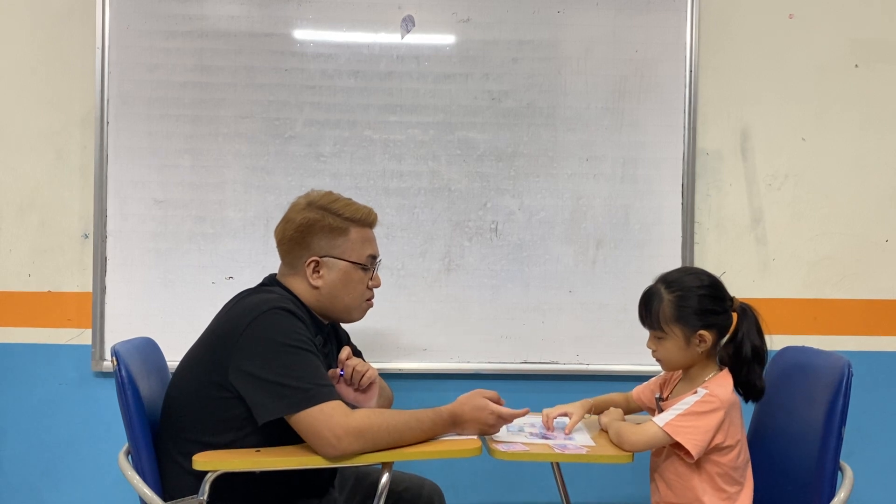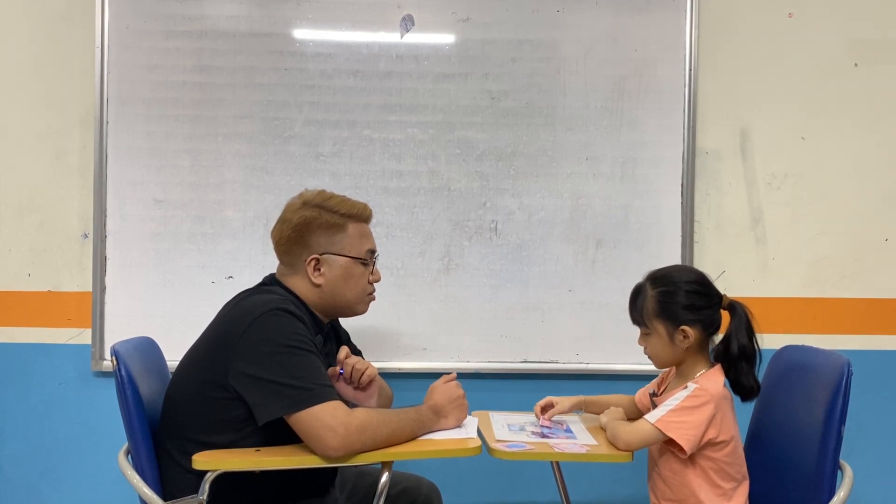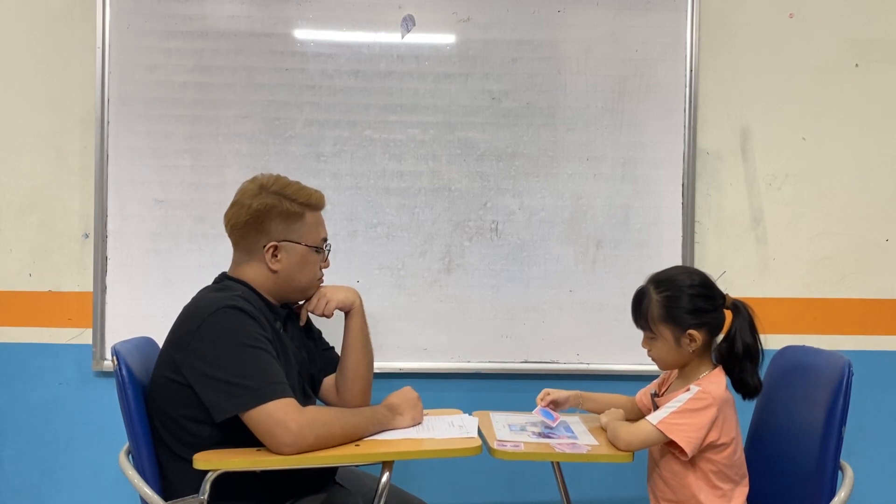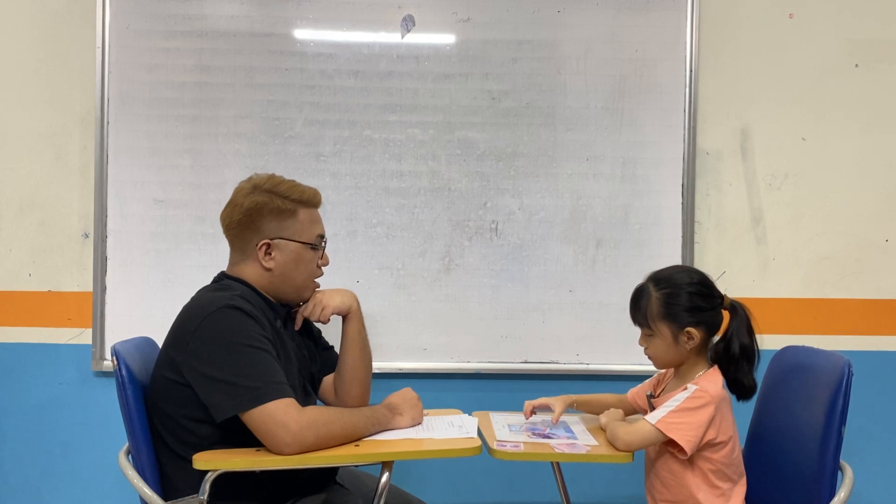There you go. Put the egg on the floor. Put the radio under the table. Put the balloon between the two children. Between the two children. Between the two children. And last, put the glasses above the TV.